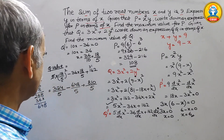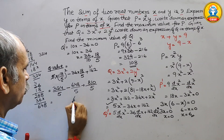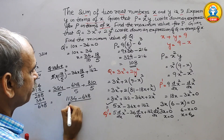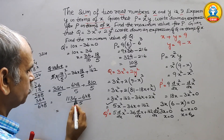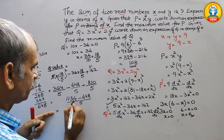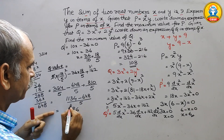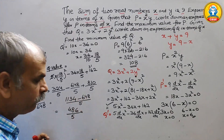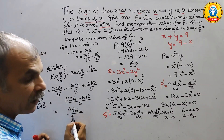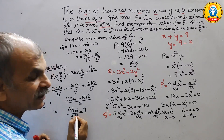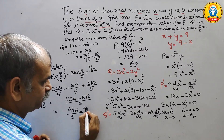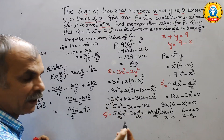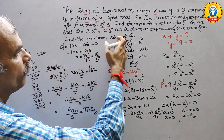Adding 324 and 810 gives 1134, then subtracting 648 gives 486 by 5. Dividing, we get the minimum value of q equal to 97.2. So this is the minimum value of q.